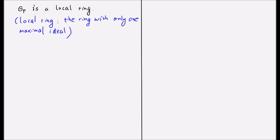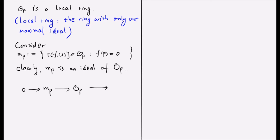we consider M_p consists of all the germs that vanish at p. Clearly, M_p is an ideal. And we can check that this ideal is maximal by showing that the quotient ring is actually a field. To this end, we consider the short exact sequence consisting of M_p, O_p, and ℝ.